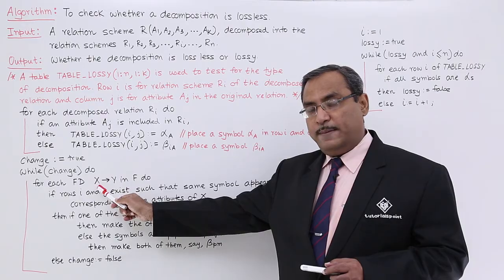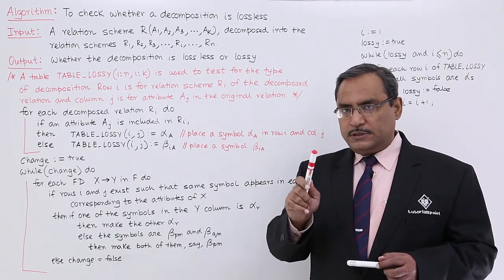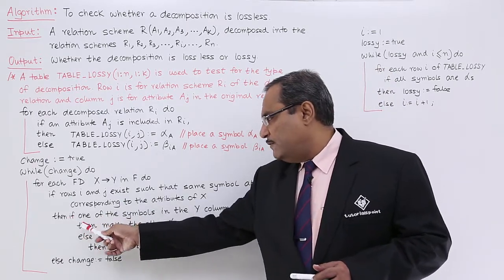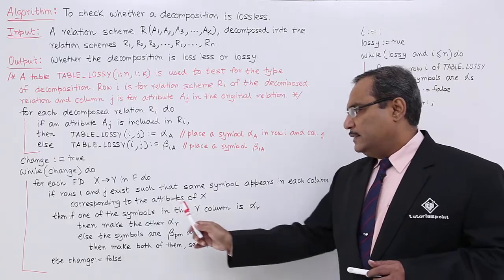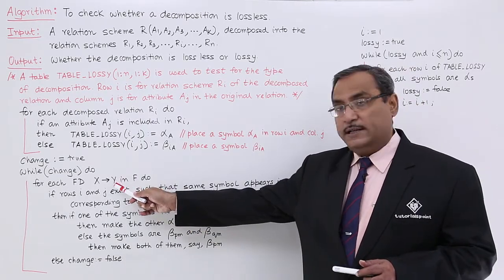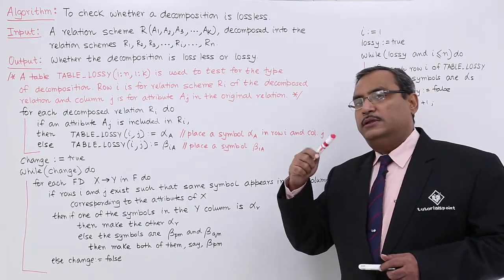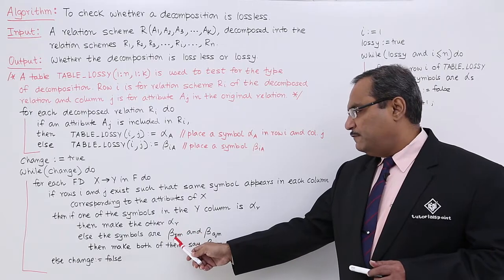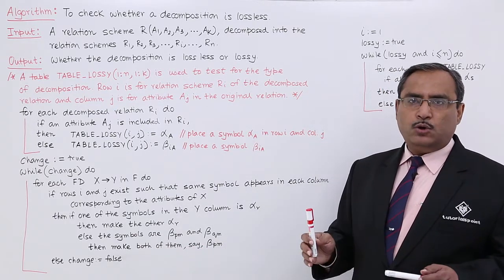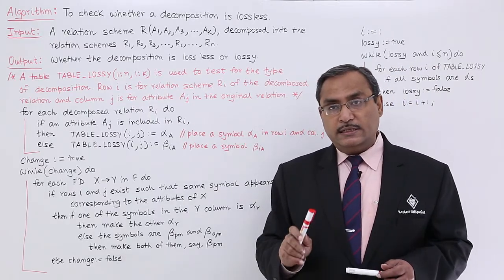If rows i and j exist such that the same symbol appears in each column corresponding to the attributes of X (the left-hand side of the functional dependency) — meaning same alpha or same beta values — then if one of the symbols in the Y column is alpha_R, make the other also alpha_R. If they are filled with beta_Pm and beta_Qm, make both beta_Pm, replacing them with the same value. This process continues for each functional dependency.